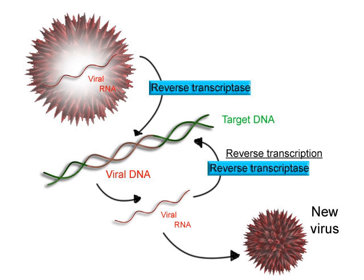A DNA transcription unit encoding for a protein may contain both a coding sequence, which will be translated into the protein, and regulatory sequences, which direct and regulate the synthesis of that protein. The regulatory sequence before, upstream from, the coding sequence is called the five-prime untranslated region; the sequence after, downstream from, the coding sequence is called the three-prime untranslated region. As opposed to DNA replication, transcription results in an RNA complement that includes the nucleotide uracil in all instances where thymine would have occurred in a DNA complement.